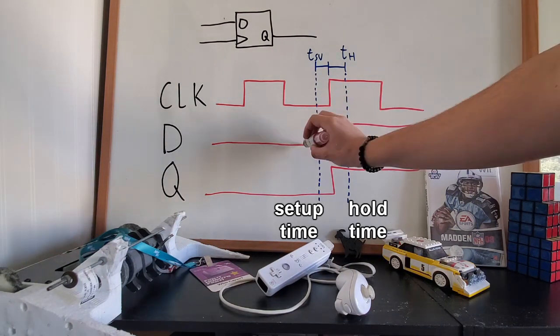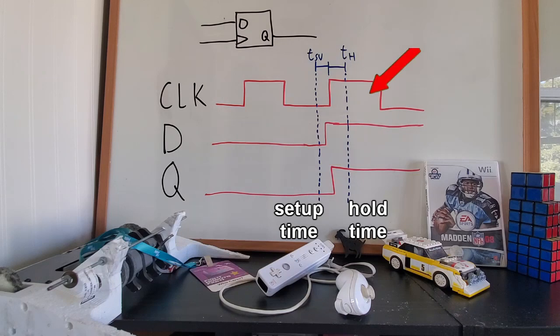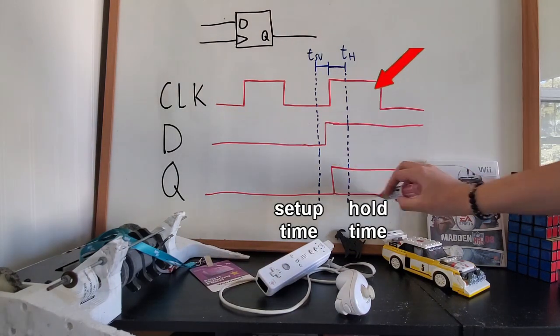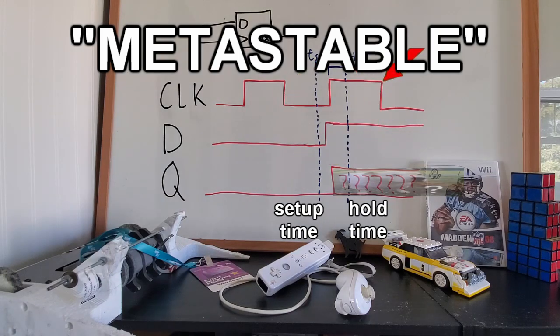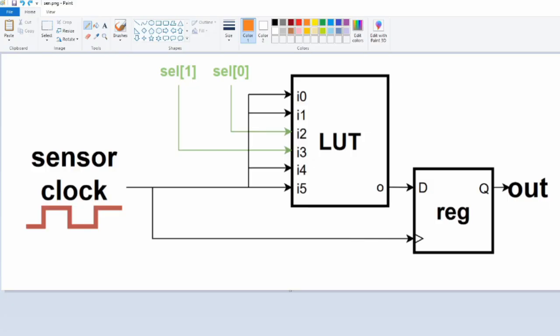If the input changes within this window dictated by the setup and hold times, that's a timing violation, and as a result the output is unpredictable or meta-stable, as the cool kids like to say. The sensor is based on this meta-stable behavior.